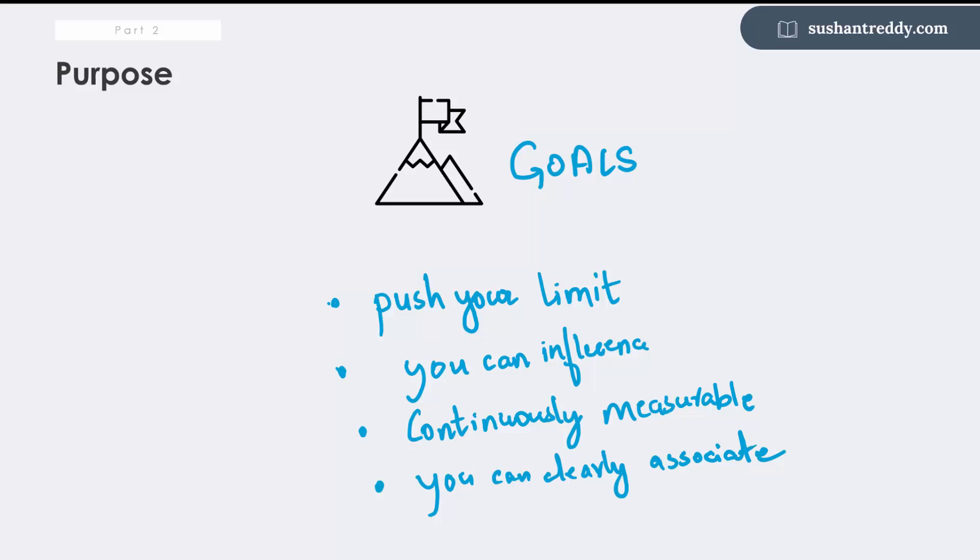So the four metrics that are important from the perspective of purpose are: Is the goal pushing my individual limits? Is the goal something I can clearly control and influence? Can this goal be measured continuously? And is this a goal that I clearly associate with? If the answer for these four questions is yes, then you have a very definitive purpose in life.